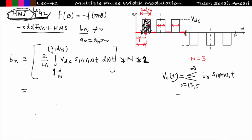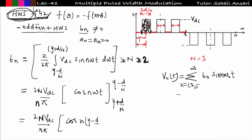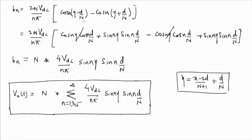Solving bn: it equals cos(n·gamma − n·d/n) − cos(n·gamma + n·d/n), which simplifies to (2nVdc)/(nπ). Applying the identity: cos(A−B) − cos(A+B) = 2sinA sinB, the cos(n·gamma) terms cancel and we get 2sin(n·gamma)·sin(n·d/n). So bn = n × (4Vdc/nπ) × sin(n·gamma) × sin(n·d/N), which is the peak value of the nth harmonic output voltage.